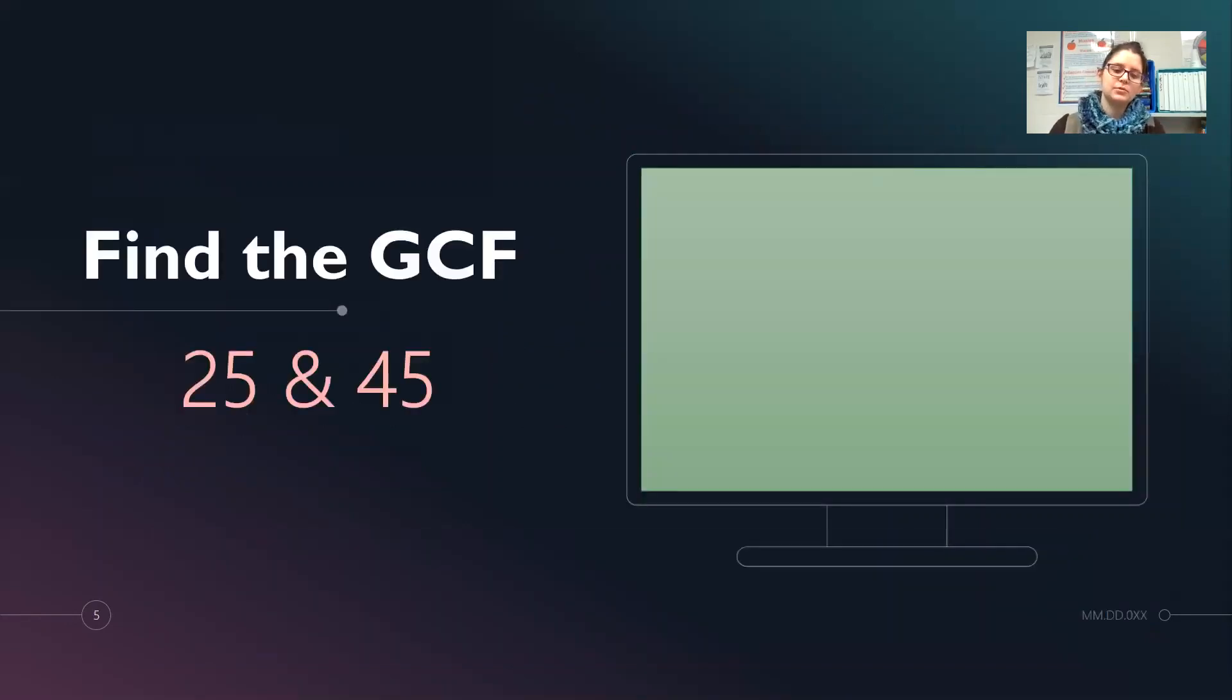So let's find the greatest common factor of 25 and 45. So we do that by writing down 25 and listing its factors. I encourage you to start with 1 and work your way up. So 1 times 25 is 25.